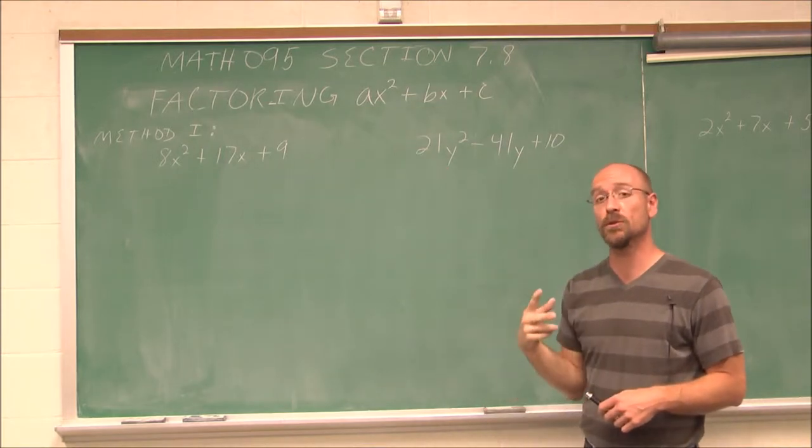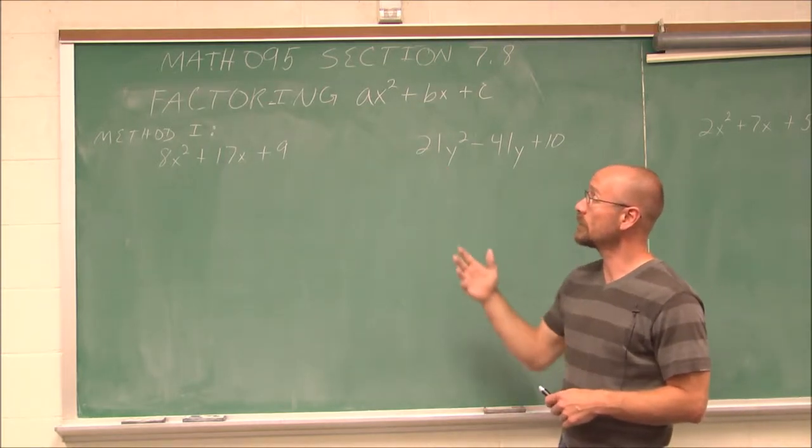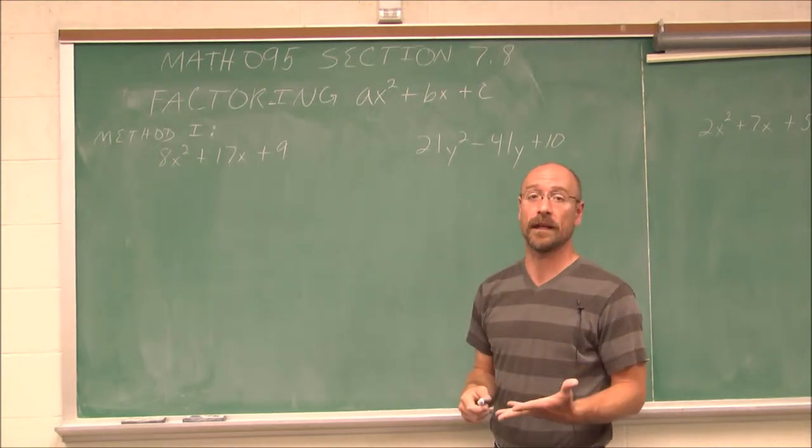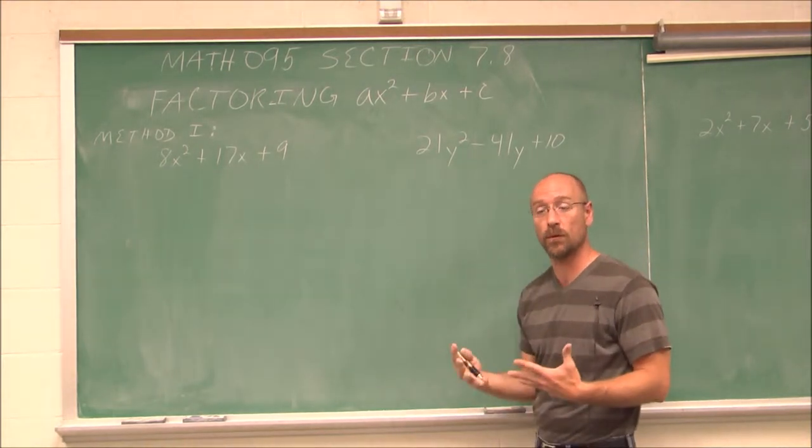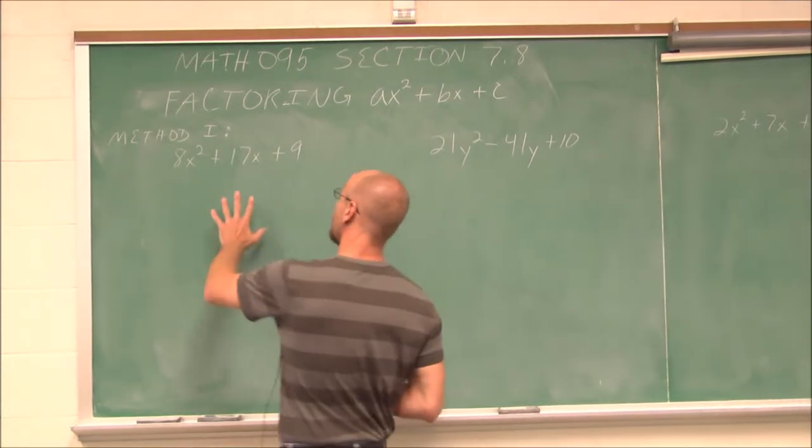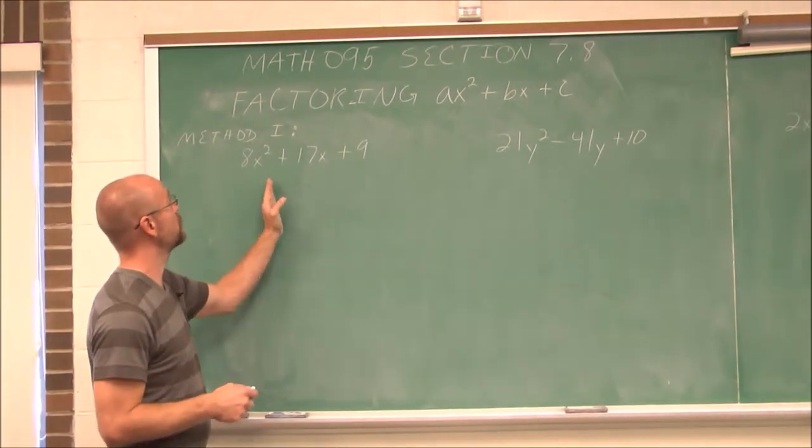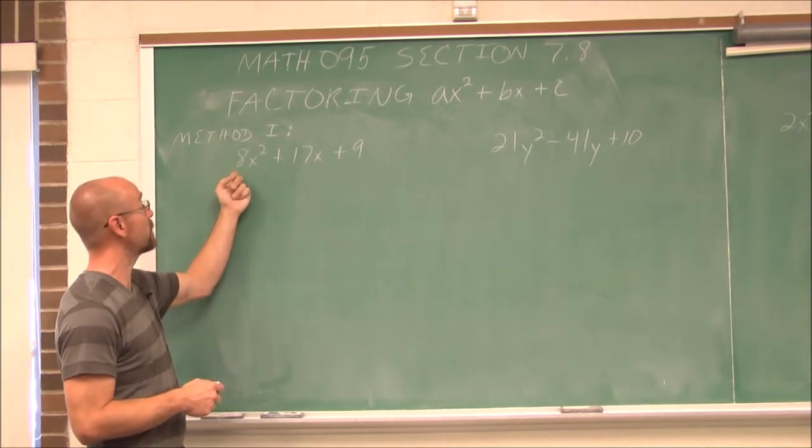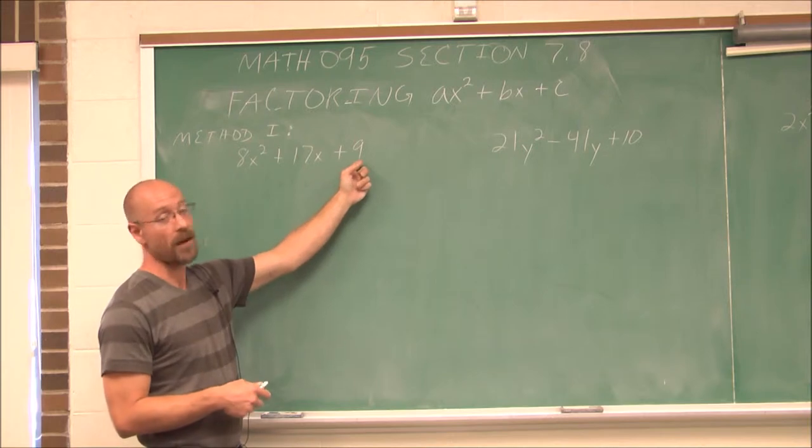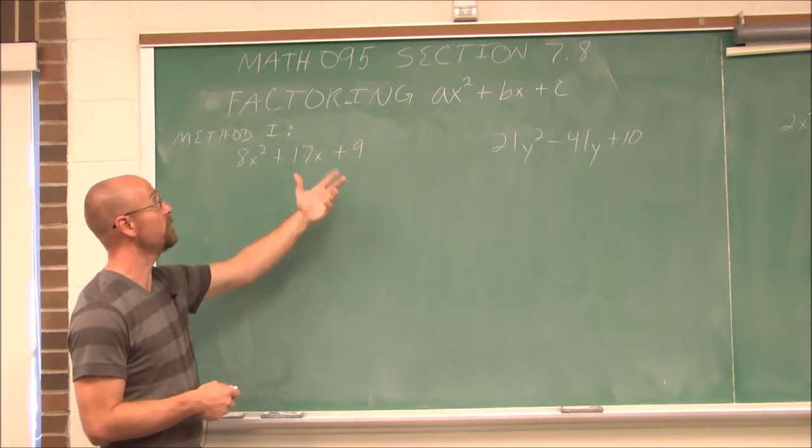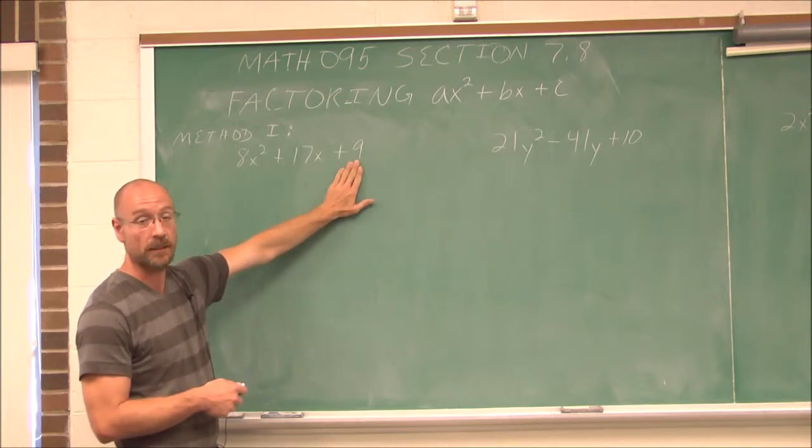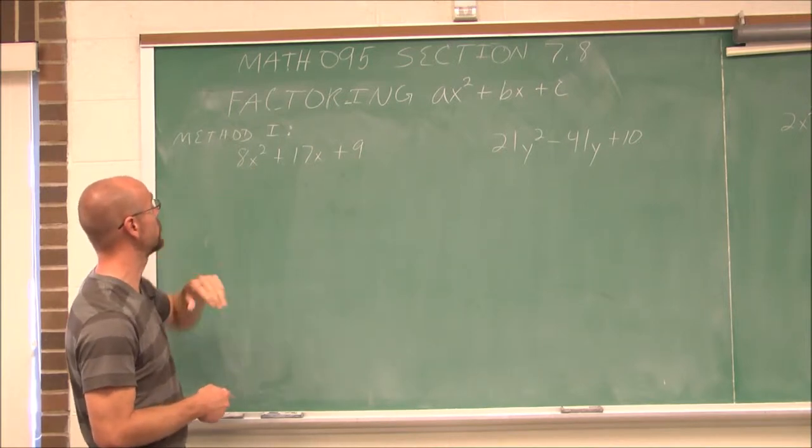We're actually going to look at two different methods. The first method, method 1, is what we call trial and error. It's sometimes referred to as reverse FOIL, but it's essentially trial and error. So to do trial and error, what we have to do is we have to consider all these factors of a, because it's not 1, and all the factors of c.